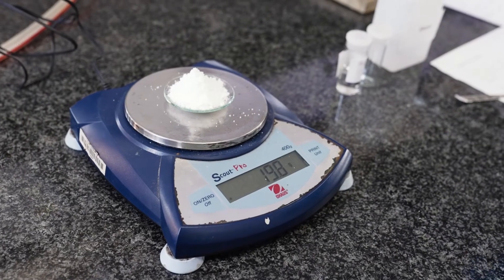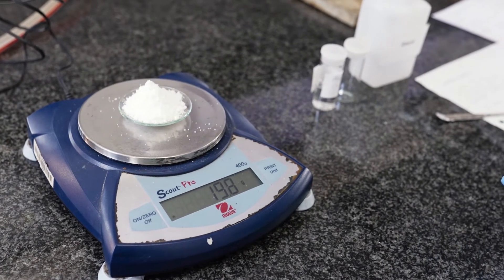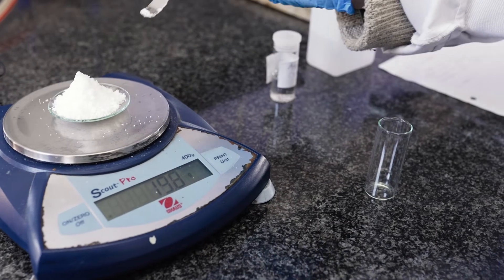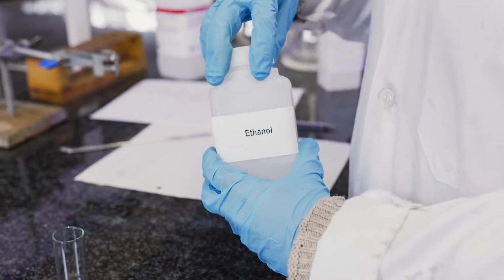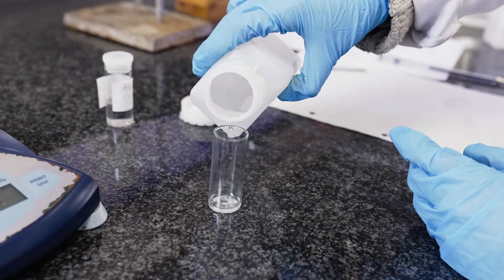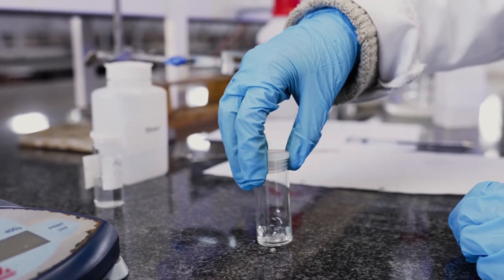We now have our aspirin synthesized, or at least what we hope is aspirin. So now we need to do our TLC plate. We're going to dissolve some of our aspirin in ethanol and then we're going to use a capillary tube to spot them on our TLC plate.